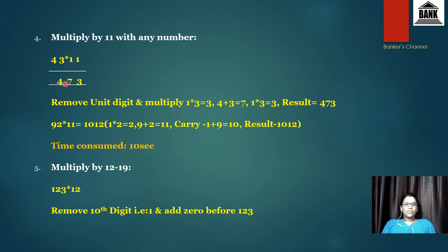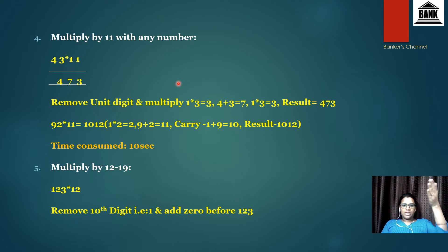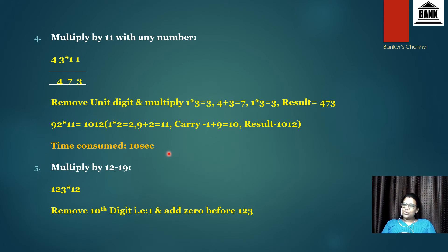The fourth technique: multiplying any number by 11. For example, 43 × 11: write down the unit digit (3), then add the two digits (4 + 3 = 7), then write the tens digit (4) — result is 473. For 92 × 11: write 2, then 9 + 2 = 11, carry the 1, so 9 + 1 = 10 — result is 1012. No pen and paper needed; takes about 10 seconds with practice.